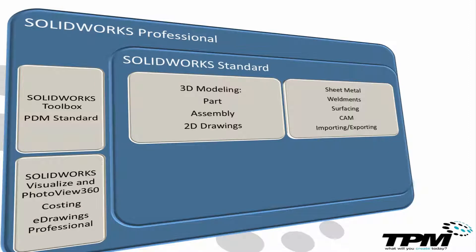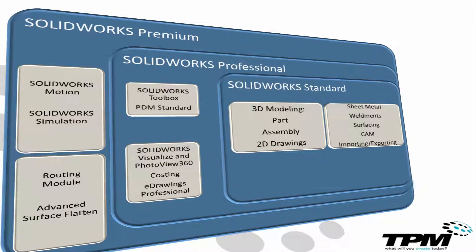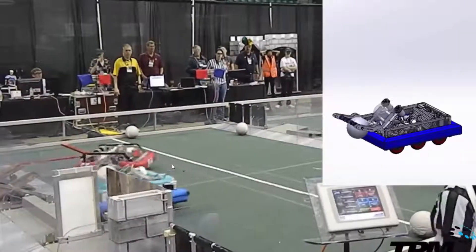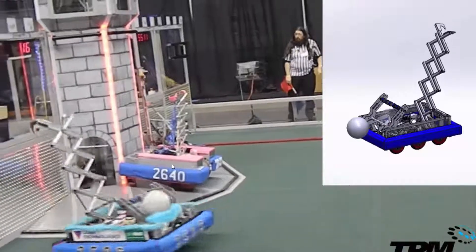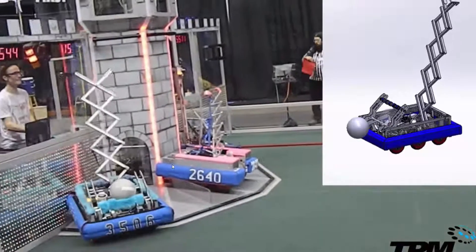The best tier of SOLIDWORKS 3D CAD is Premium. Educational seats will have most of this functionality. Premium includes motion analysis, structural analysis, routing of pipes, ducts and electrical harnessing, and advanced surface flattening. Premium also includes all of the existing 3D CAD functionality used for mechanical engineers who design for failure prevention in their products.